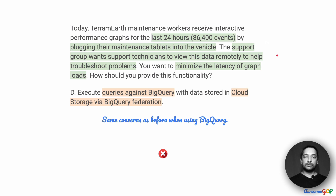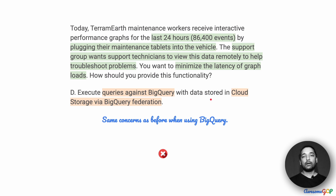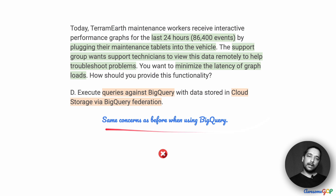Option D starts with the same idea of running queries against BigQuery, which as we discussed is a possibility — BigQuery is fast for reads and is a great analytical database. But the fact that it does not scale well for writes and is not truly global makes it a bad option already. Without even considering the added complexity of Cloud Storage and BigQuery Federation, which is not going to help and will only hinder speed, option D will not be suitable for us either.